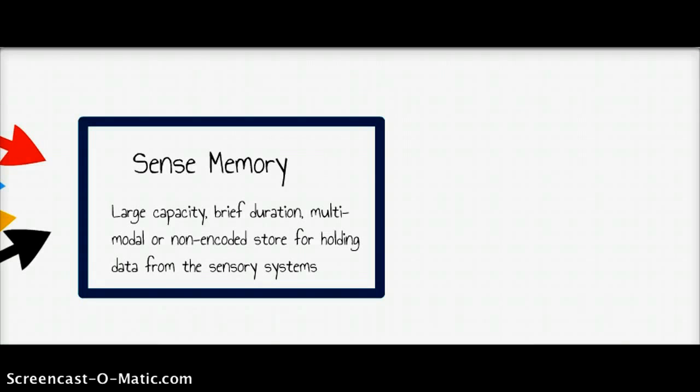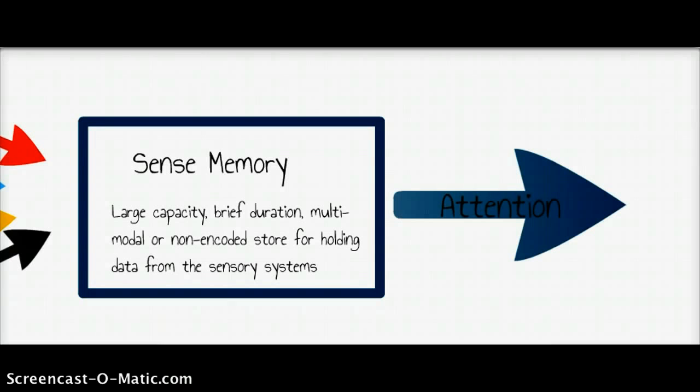That passes through the attentional system or through the attentional process into another store. So we've got an overwhelmingly large amount of information that only lasts mercifully for a very brief amount of time, and we select from it via the attentional process stuff that we pass into short-term memory.